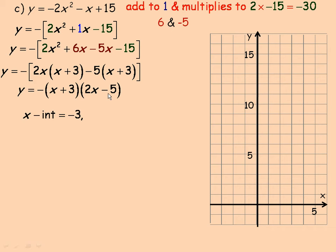And then we'll also set the 2x minus 5 to 0. So I'll do that up here. And so if we go to solve for x here, we'll add 5 to both sides. So then we would have 2x equals 5. And then dividing out the 2, we get x equals 5 halves.